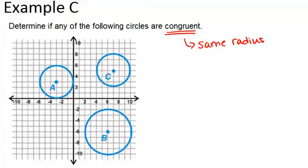So let's determine the radius for A, B, and C. For circle A, the radius is three units long. I can just count one, two, three. For circle B, the radius is four units long. So you can count one, two, three, four. And for circle C, the radius is again three units long. So that means circle A is congruent to circle C.